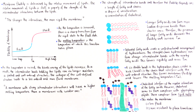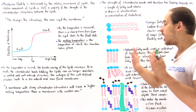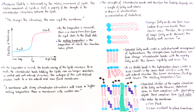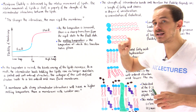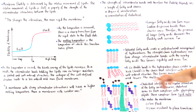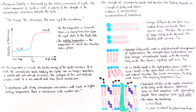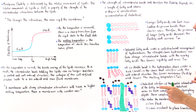A cis double bond in unsaturated systems creates a kink — a bend in the structure — that interferes with the well-defined arrangement of the membrane. This favors membrane fluidity: it decreases rigidity and lowers the melting temperature of that system.